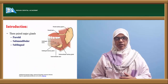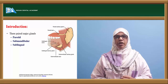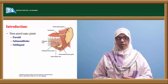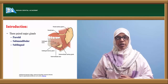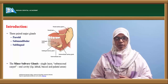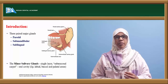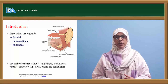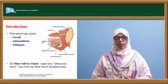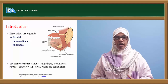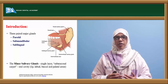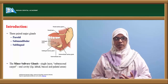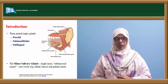We're all aware that there are three pairs of main salivary glands — the parotid, the submandibular, and sublingual — and minor salivary glands, around thousands in number, which form a single layer of submucosal carpet in the oral cavity, wrapping around the lip, the labial, buccal, and palatal mucosa.